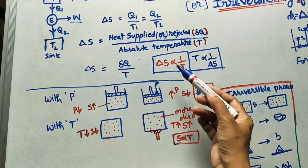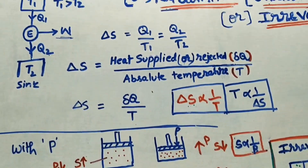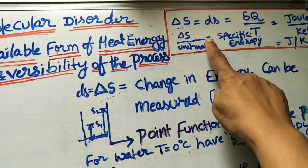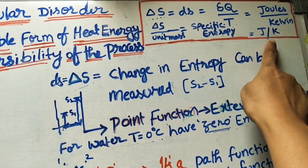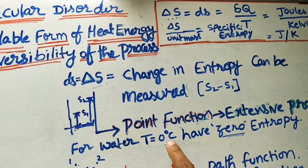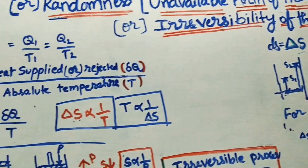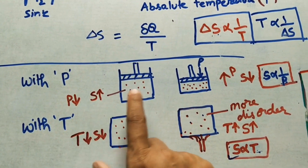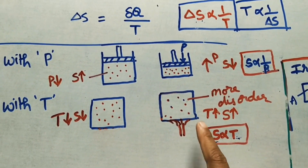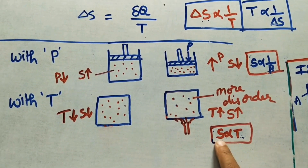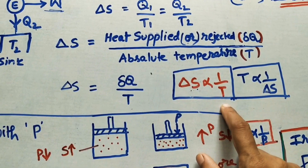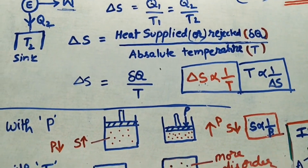In today's class we covered entropy with three definitions, examples for each, the formula ΔS = δQ/T, units of joules per kelvin, T in Kelvin, entropy as an extensive property, reference entropy of zero at T = 0°C, entropy inversely proportional to pressure, entropy of a system proportional to temperature, and change in entropy inversely proportional to temperature.